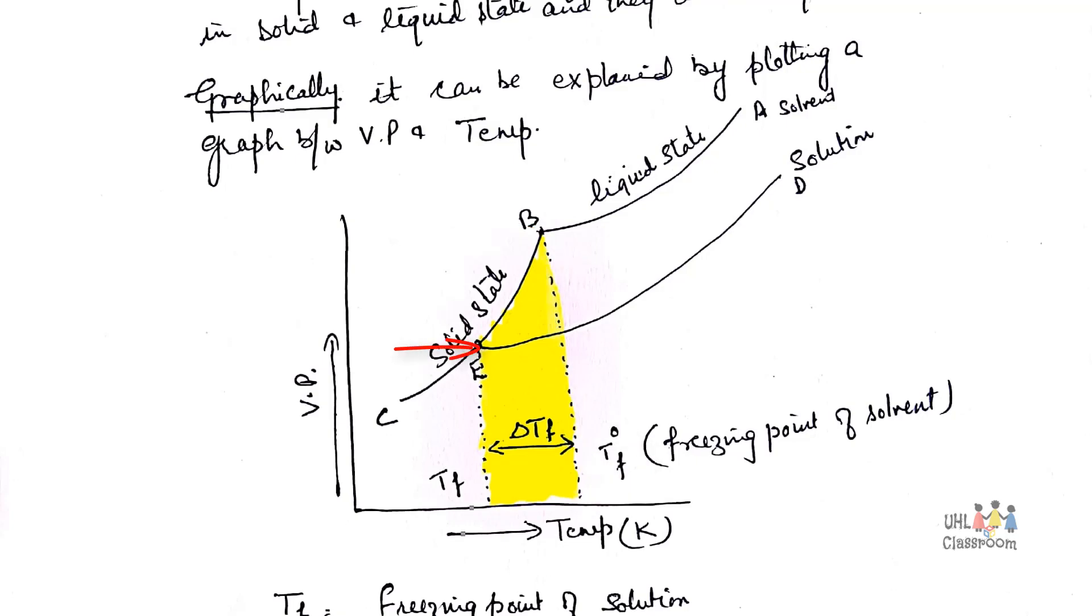Similarly, at point E, the vapor pressure of a solution in liquid state will become equal to the vapor pressure of the solid phase and temperature corresponding to it T0F is the freezing point of a solvent. From the graph it is clear that when a solution is formed, there is a decrease in freezing temperature, that is delta Tf.